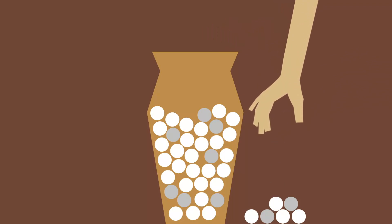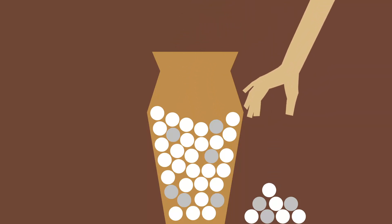This giant urn represents possible ideas and discoveries, technologies that can be realized in this world. Throughout history, we have put our hands into this urn and pulled out one idea after another. So far, all these balls that we have extracted from the urn have been white or gray, meaning they have been beneficial or maybe in some cases a mixed blessing.